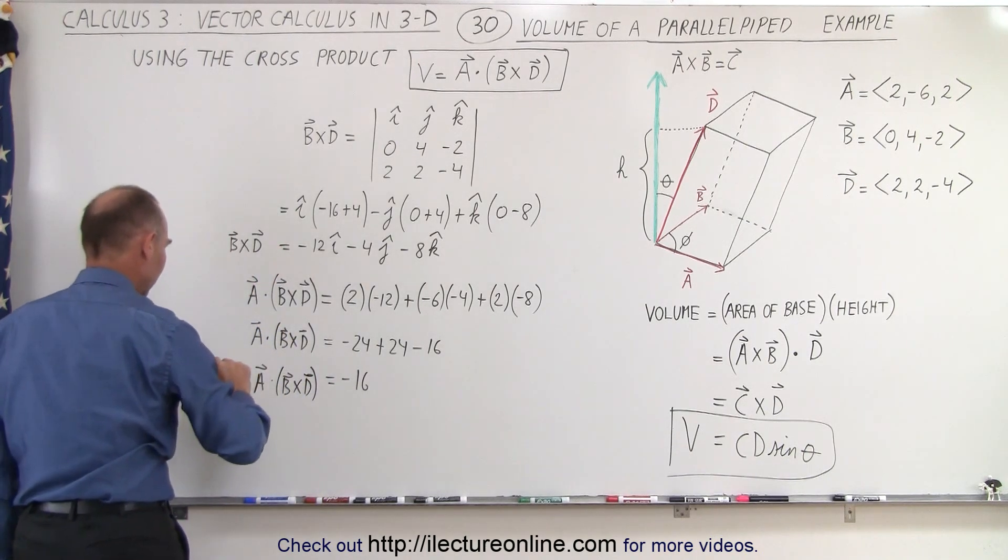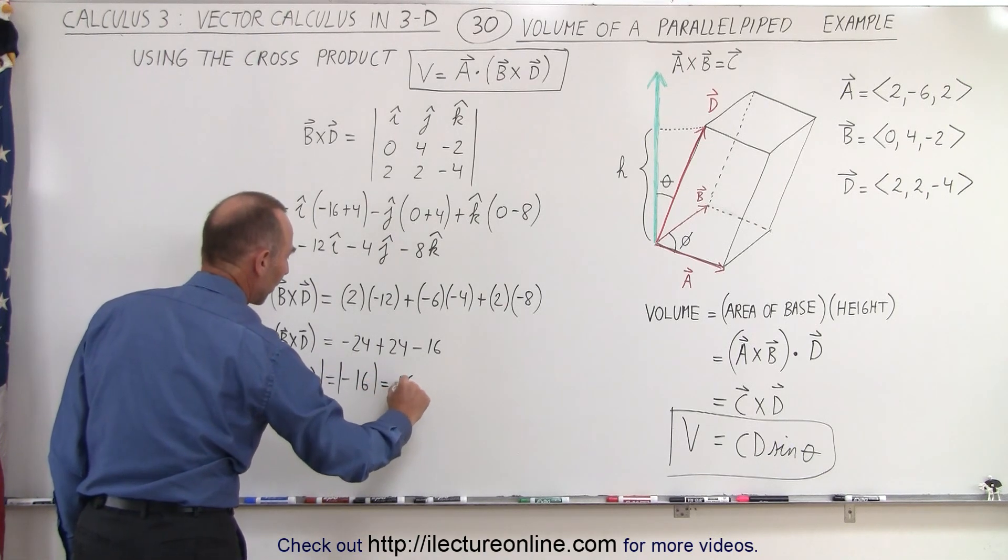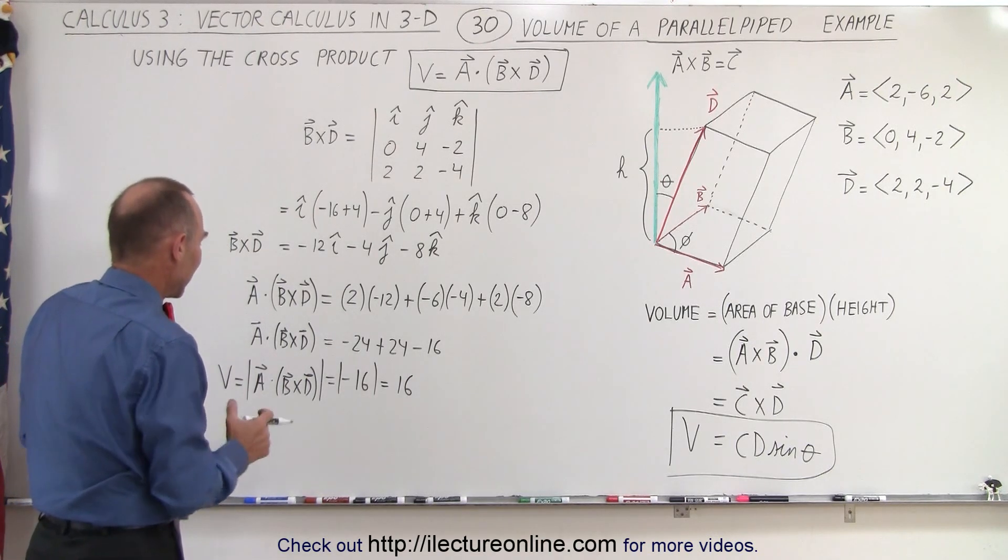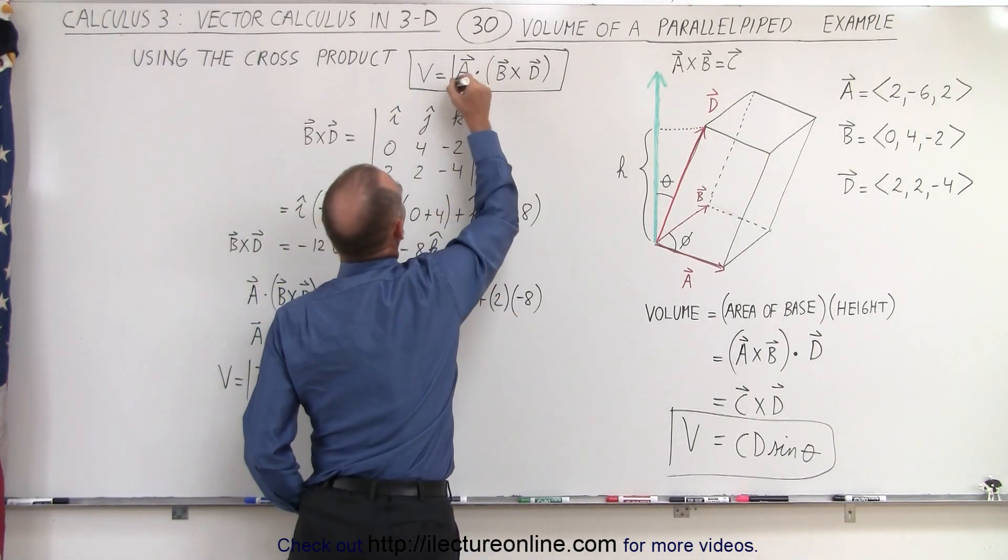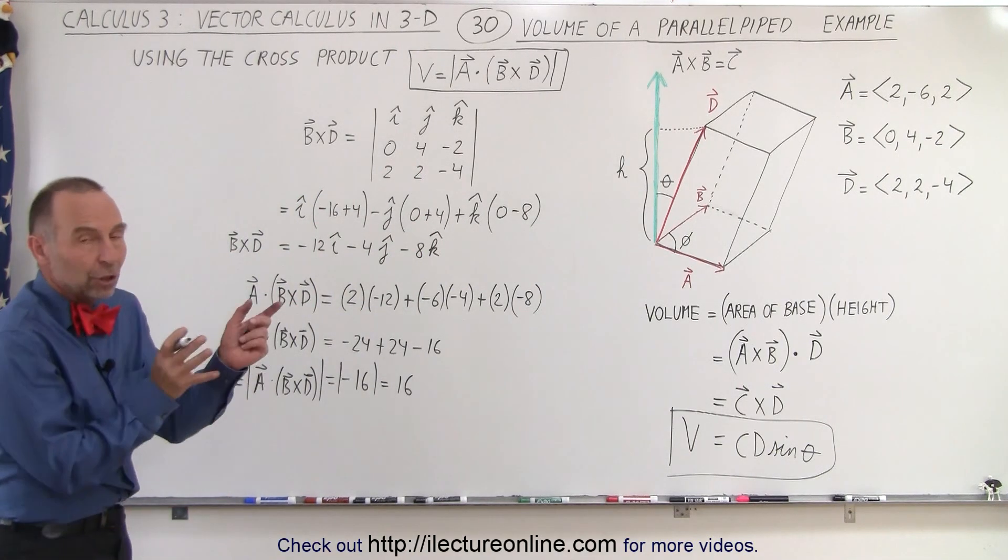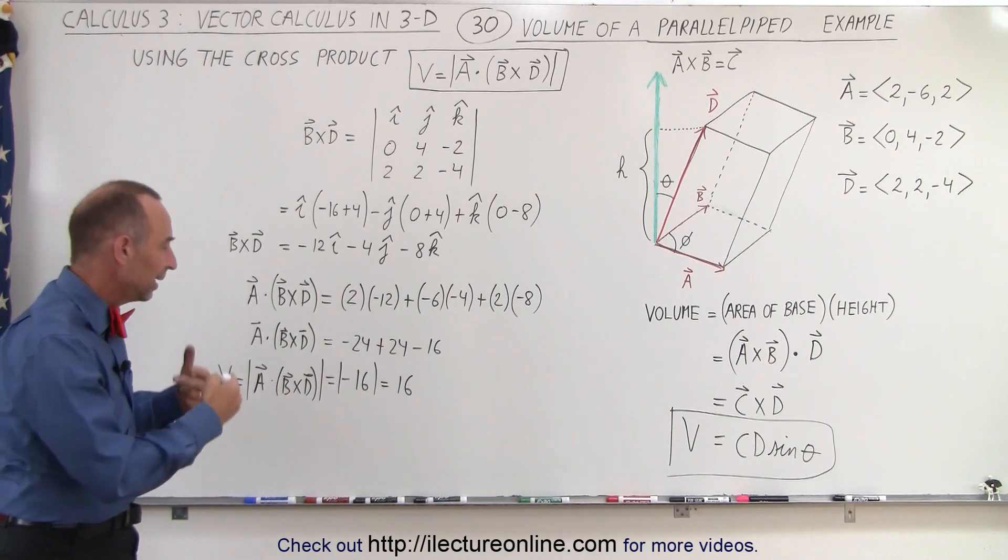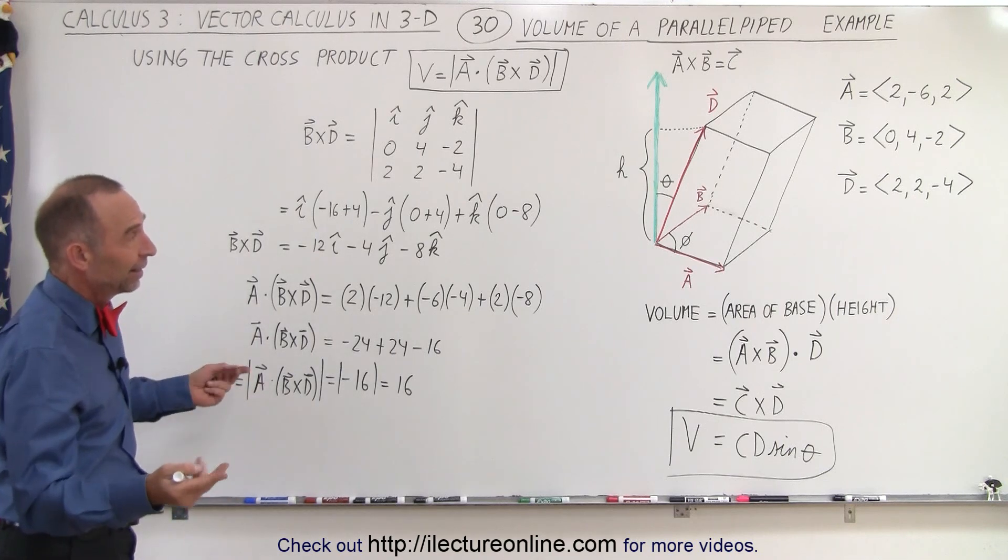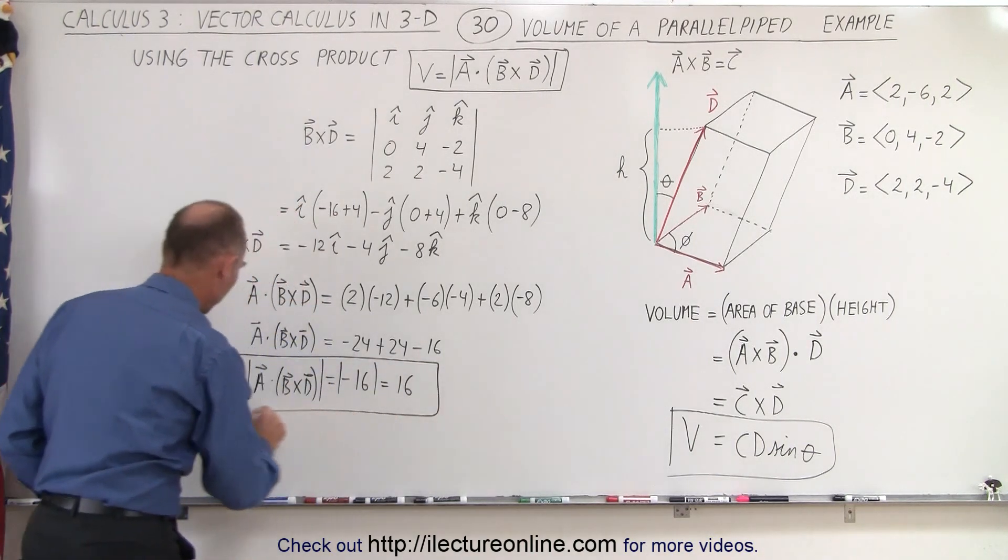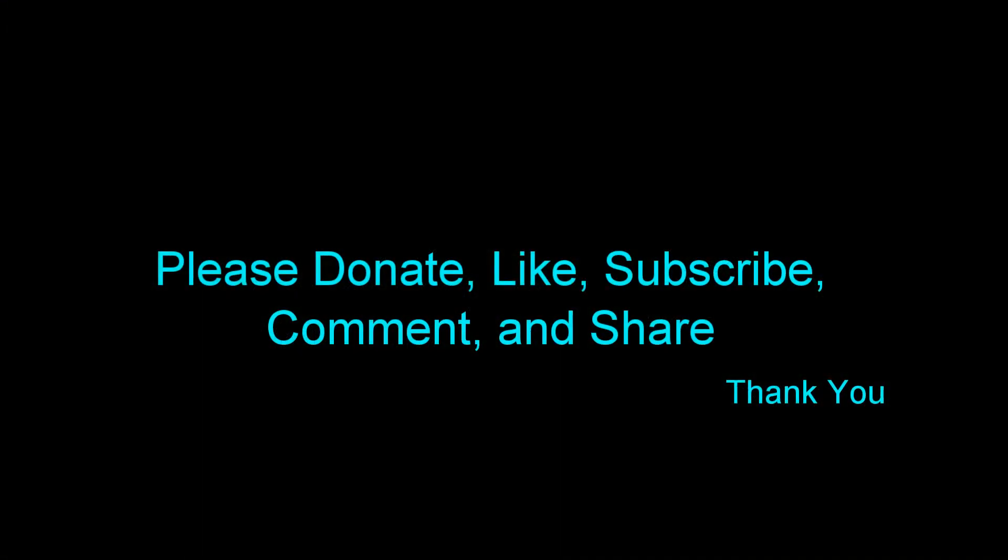So this is A dotted with B cross D, but then you realize that if you want to say that's equal to the volume, you're going to require to take the absolute value of that, which is going to be equal to a positive 16, because there's no such thing as a negative 16 volume. And so it would be a good idea to go ahead and put absolute value signs around it, just to say, in case it comes out negative, because you may not know how A, B, and D are oriented, so that it could be that when you take the dot product, you end up with a negative quantity. It doesn't mean that's a negative volume. You simply make it positive, and that will then give you the volume of that parallelepiped, and that's how it's done.